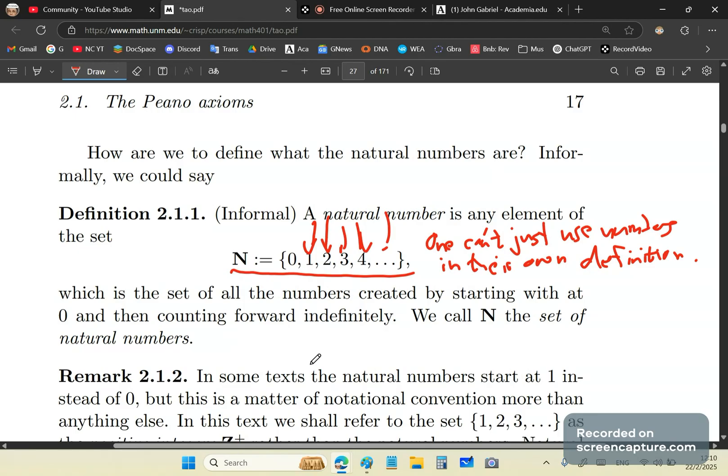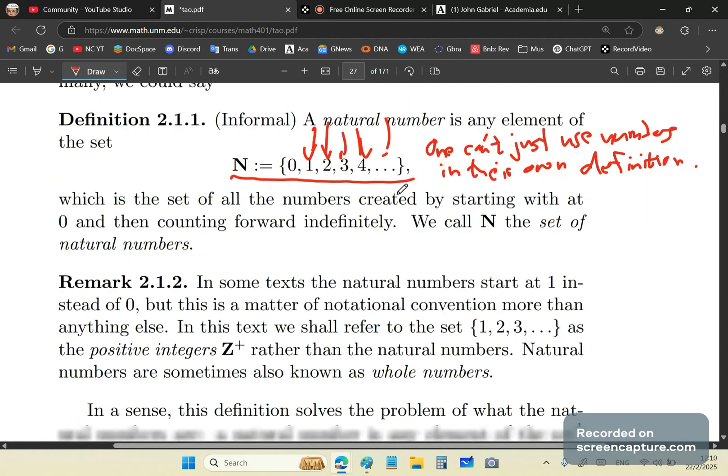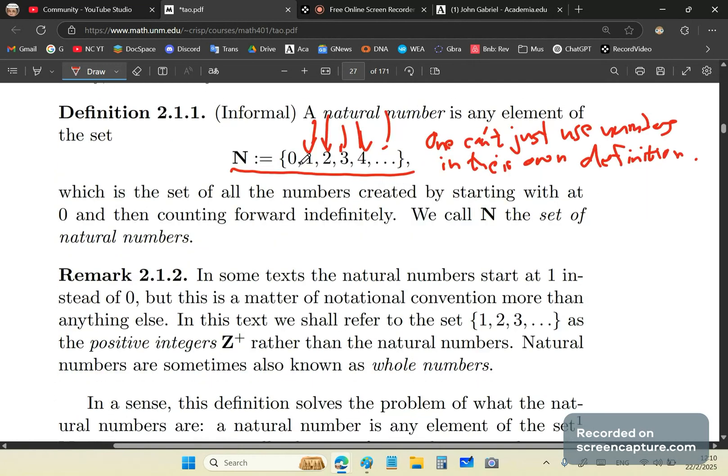And it makes my blood boil when I see stuff like this written and why students are confused. How the hell do you know that this here means that these are natural numbers? You don't know that you haven't even said what a number is. So he hasn't even defined number, but he is defining natural numbers. People wake up. You're morons. And I'm telling you, you need to wake up.